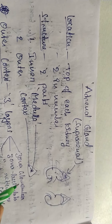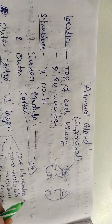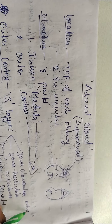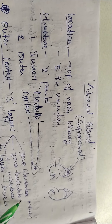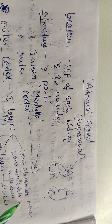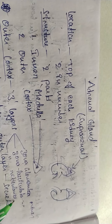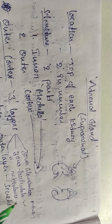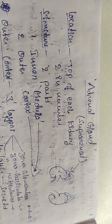The first layer is zona glomerulosa, which secretes the mineralocorticoids. The second layer is zona fasciculata, which secretes the glucocorticoids. The third layer is zona reticularis, which secretes the sex steroids.